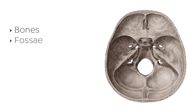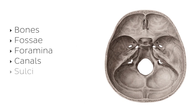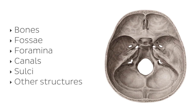So we're going to be seeing bones, different fossae, foramina, canals, some sulci, as well as other structures that are related to the different bones seen from this view.